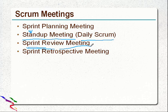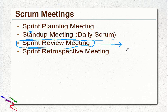The sprint review meeting takes place at the end of the sprint, where all the shippable functionality is demonstrated to the product owner and either accepted or rejected. All the accepted functionalities will be released, and items not accepted should go back to the product backlog.